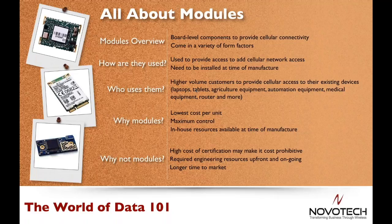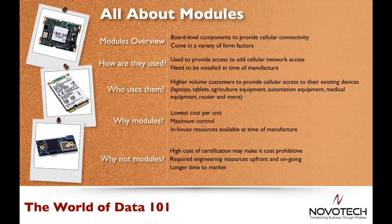The benefits of modules are primarily two C's: control and cost. They offer the lowest cost per unit to connect to the internet, which makes all the sense in the world for large production runs. They also allow the manufacturer maximum control over the solution, with all kinds of commands and instructions that can be built in. The downside is that the manufacturer must take on much of the industry and carrier certification, as well as the engineering cost to bring the solution to market — which not only adds cost, but can add several months to even a couple of years to the time to market.